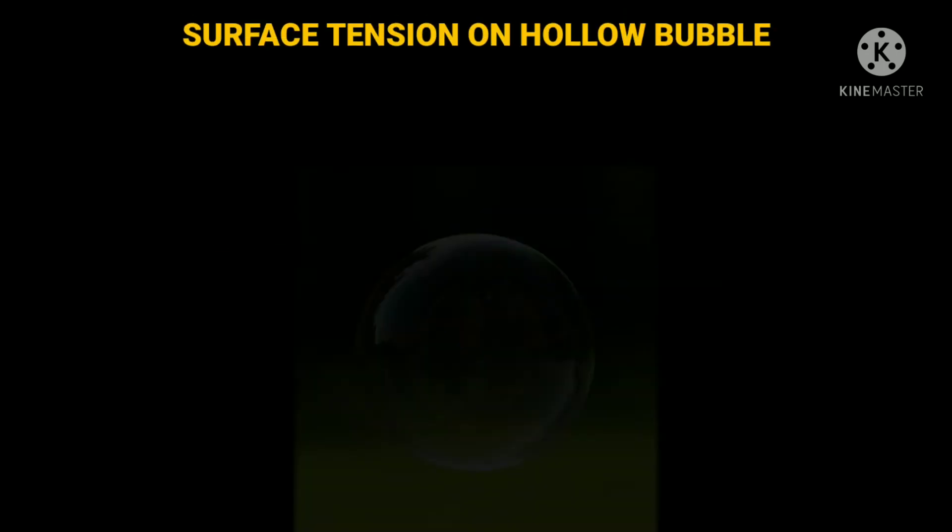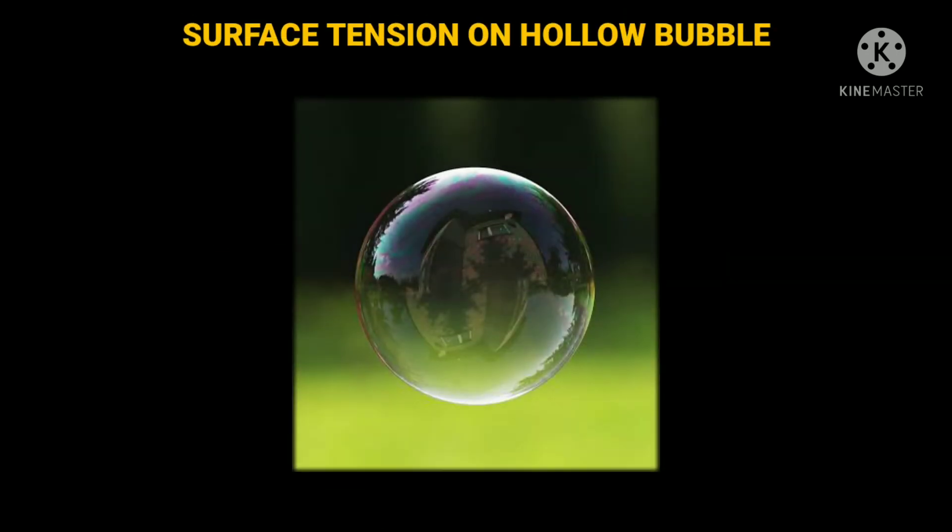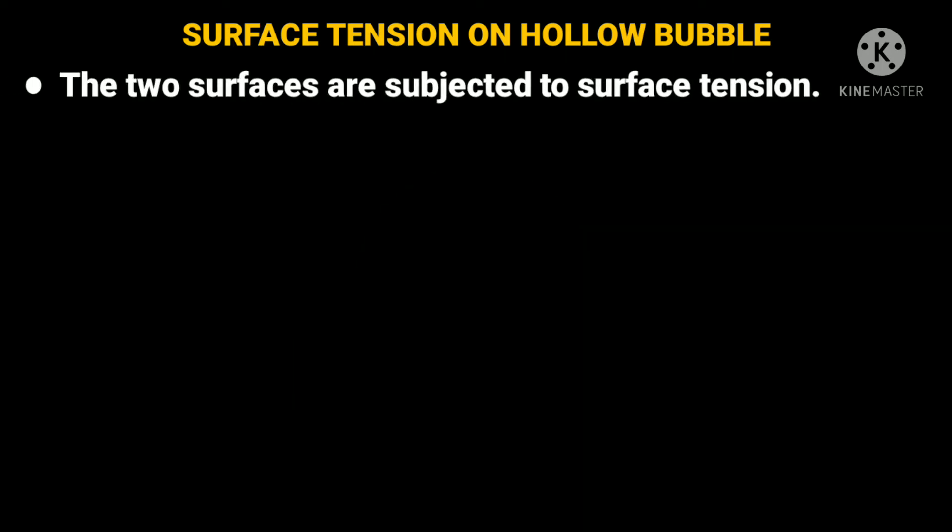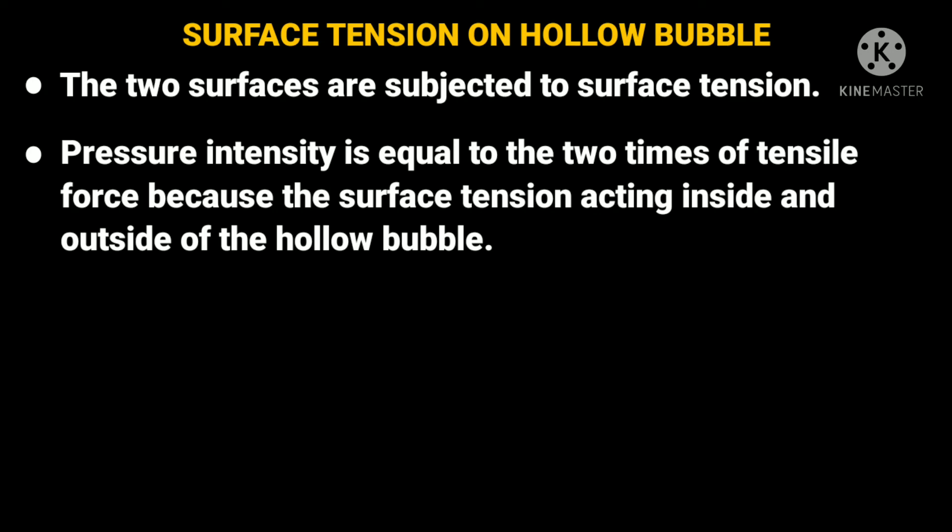Now, let us see the surface tension on a hollow bubble. Here, a hollow bubble is like a soap bubble in air. It has two surfaces in contact with air, one inside and other outside. Thus, the two surfaces are subjected to surface tension. In such case, pressure intensity is equal to the two times of tensile force because the surface tension is acting inside and outside of the hollow bubble.